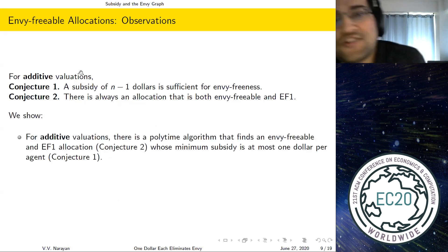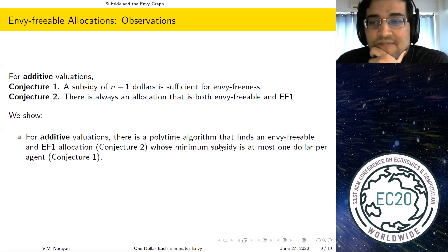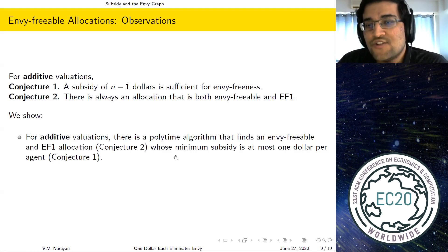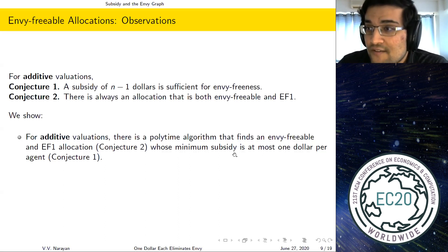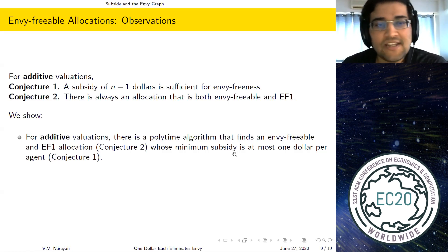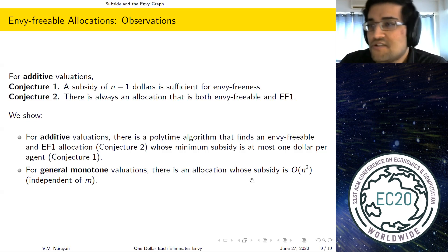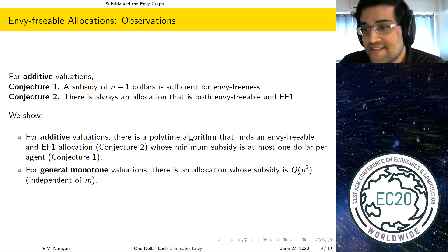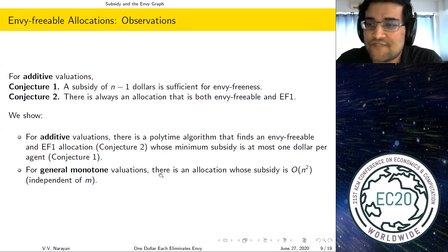We resolve both conjectures for additive valuations and go further. We give a poly-time algorithm that finds an allocation that is simultaneously envy freeable and EF1 — resolving conjecture 2 — and that same allocation has minimum subsidy at most n−1 dollars — resolving conjecture 1. In fact, we show something stronger: the subsidy to each individual agent is at most $1. Separately, for the broader class of general monotone valuations, we show there is an allocation with subsidy O(n²), which is again independent of the number of items.